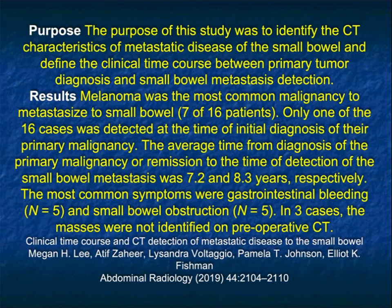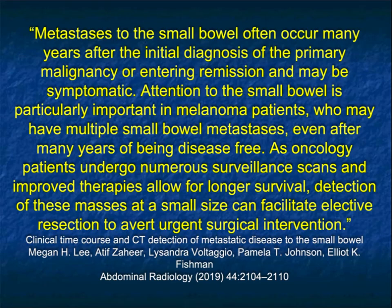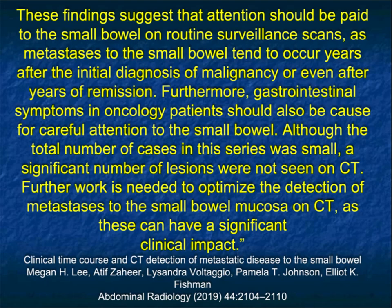In an article by Megan Lee, she made the point that the average time from diagnosis of primary malignancy or remission to detection of MET was over seven years. Small bowel METs often occur late — you're not really thinking about them. Small bowel METs from renal cell occur at least 10 years later, the same being true for METs to the pancreas from renal cell. So you need to be very careful during routine oncology follow-ups. Nothing is ever routine. As oncology patients undergo numerous surveillance scans and improved therapies allow for longer survival, detection of these masses at a small size can facilitate elective resection to avert urgent surgical intervention.